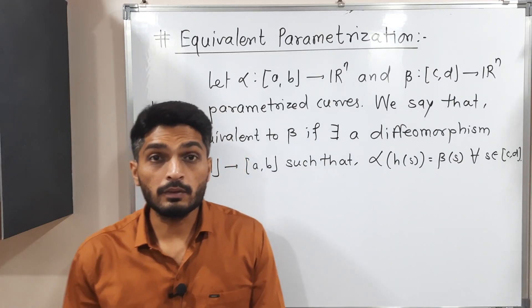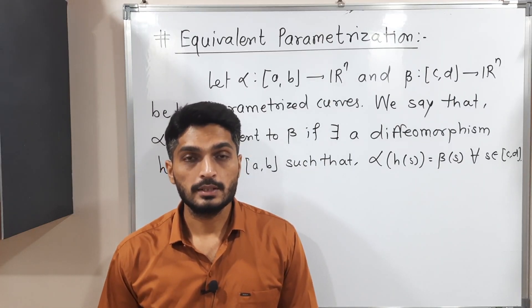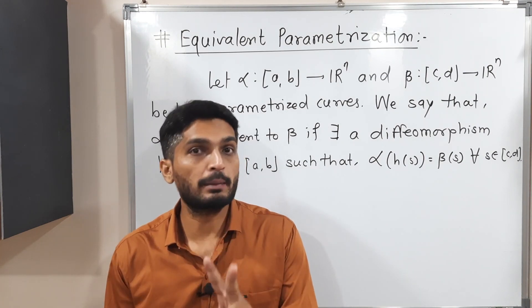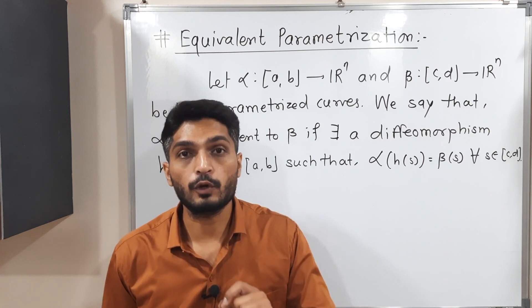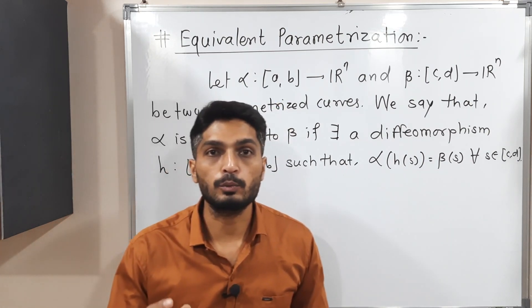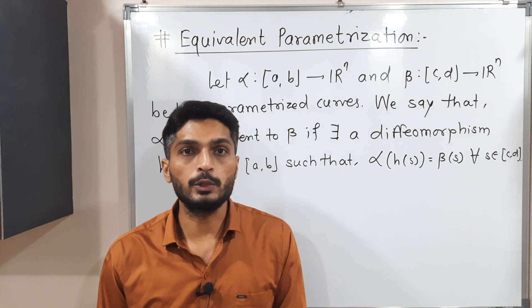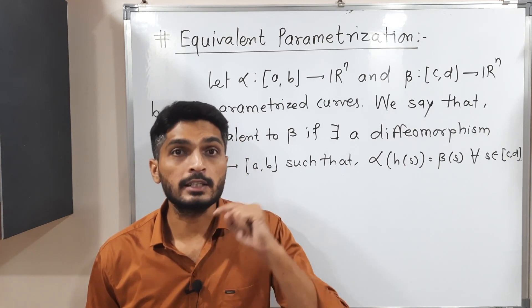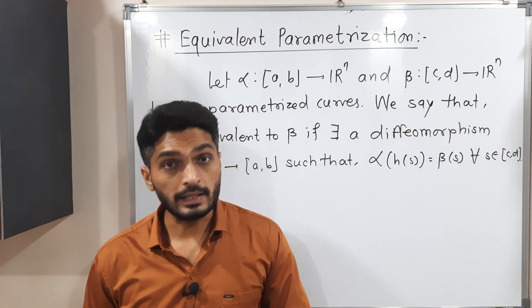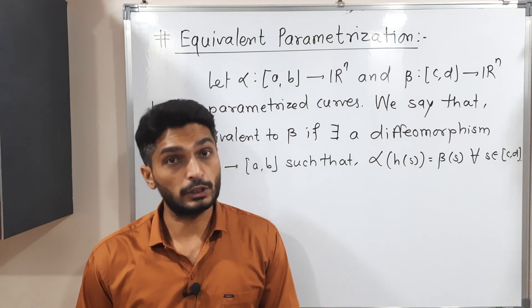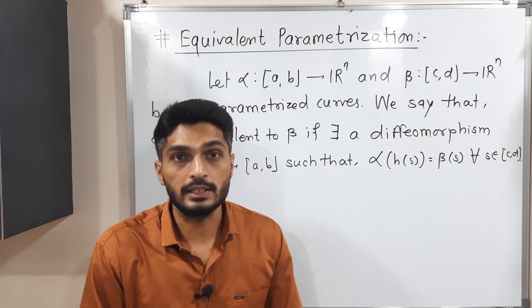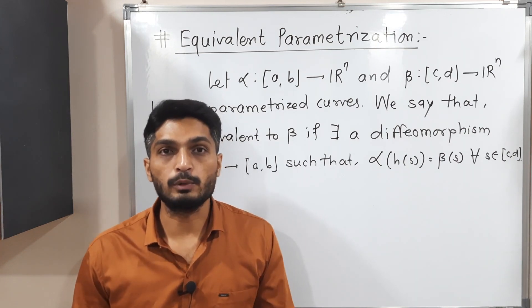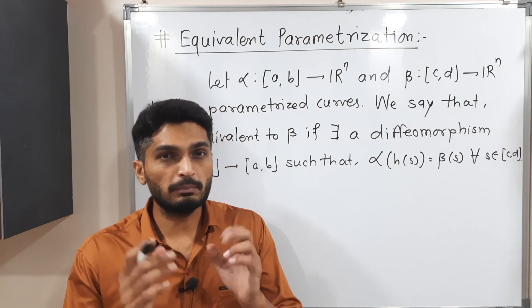Let us discuss the concept of equivalent parameterization. Suppose we have two parameterizations: alpha defined from closed interval [a, b] to R^n, and beta defined from closed interval [c, d] to R^n. We say alpha is equivalent to beta if there exists a diffeomorphism h defined from [a, b] to [c, d] such that alpha of h of s equals beta of s for all s in [c, d].